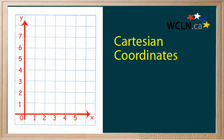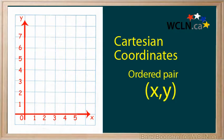Set up a scale on the x- and y-axis. Number each of the lines starting at zero. The coordinates are always written in a certain order: the horizontal distance first, then the vertical distance. This is called an ordered pair.